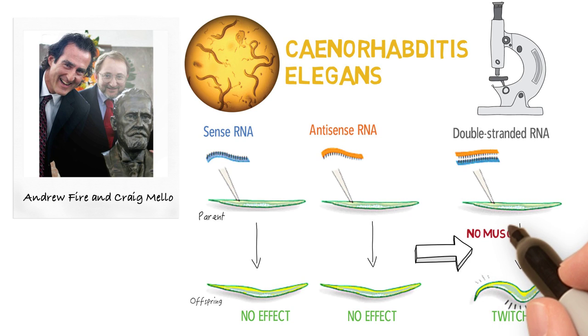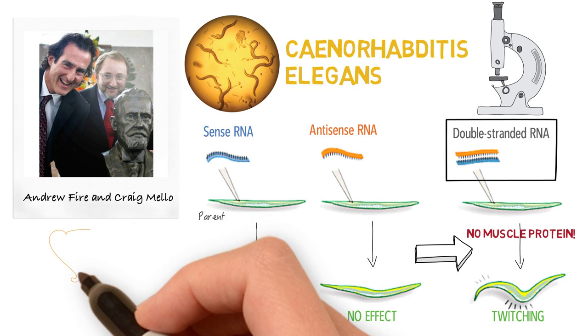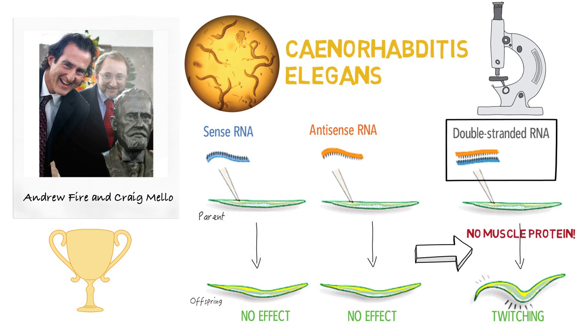They stumbled upon the basic mechanism of RNA interference, where the double-stranded RNA, or dsRNA, degrades messenger RNA before it can code for the muscle protein. The scientists later won a Nobel Prize for the discovery in 2006.